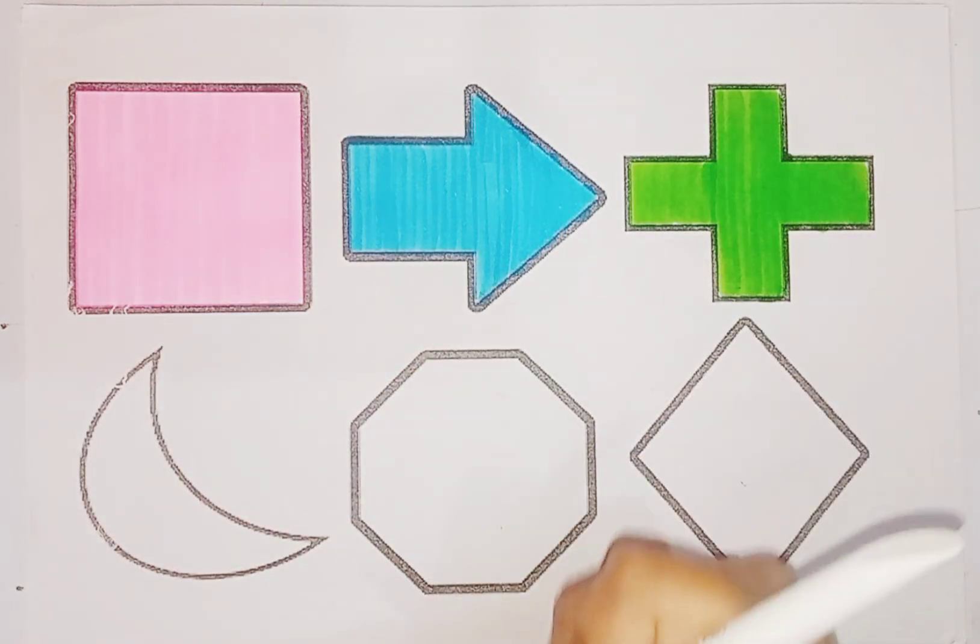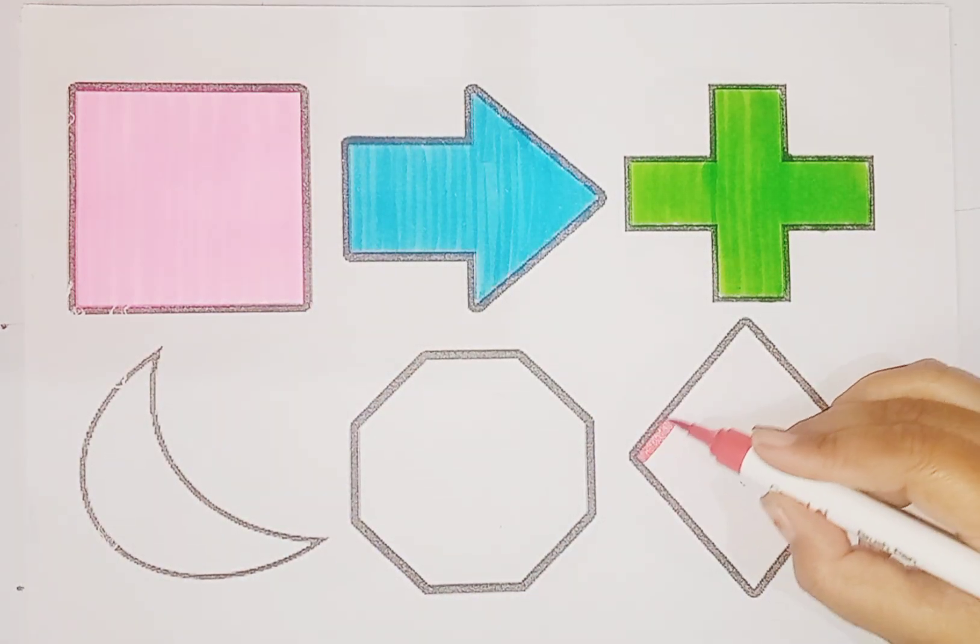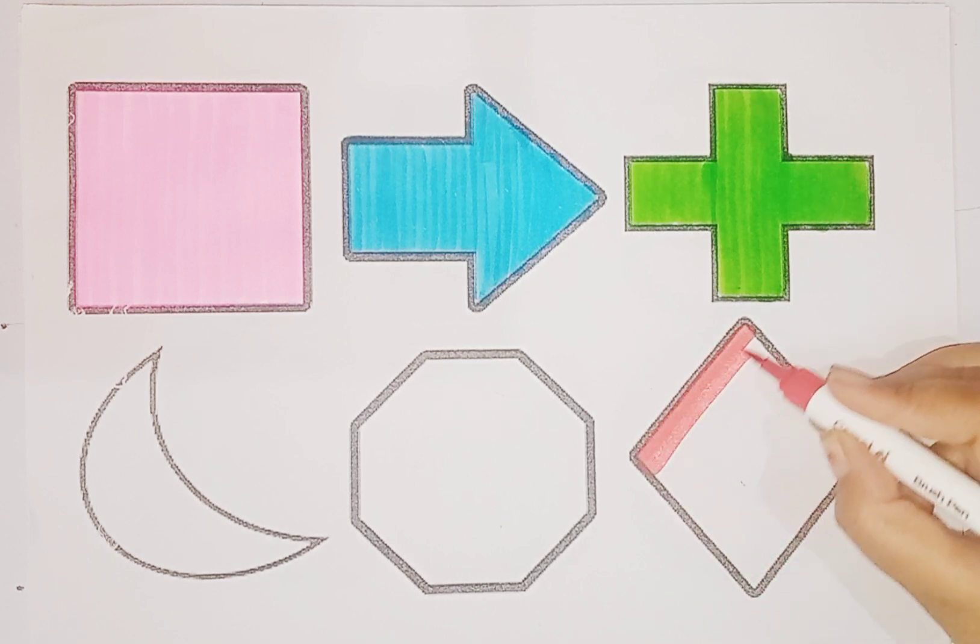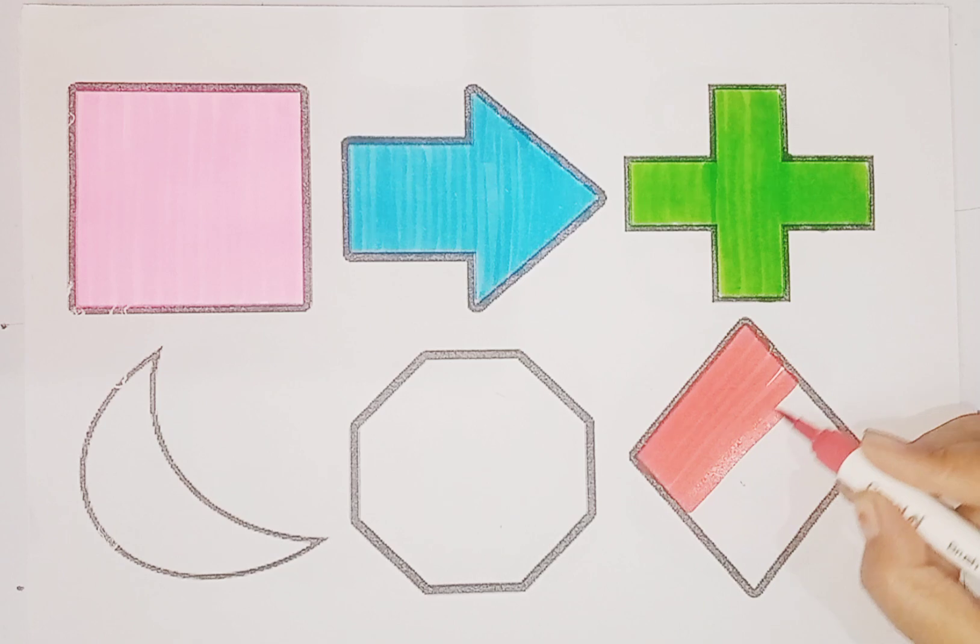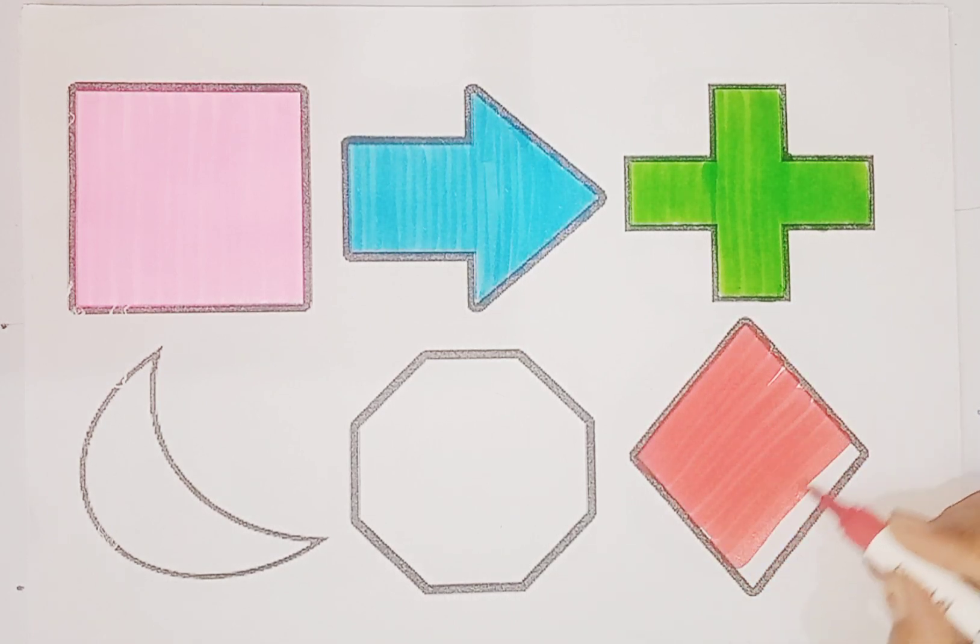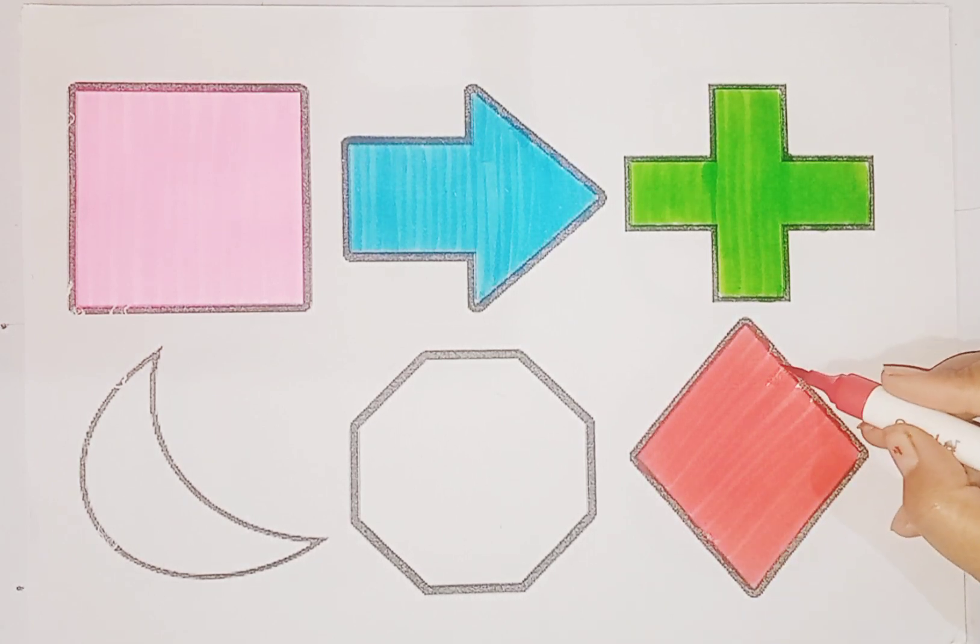Red color. This is diamond shape, also called rhombus or diamond shape.